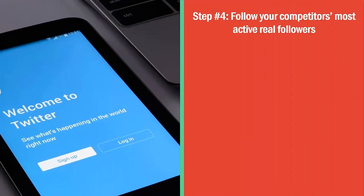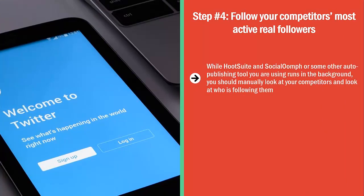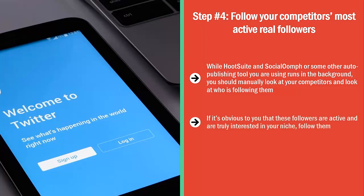Step number four: follow your competitors' most active real followers. While Hootsuite and Social Oomph or some other auto-publishing tool you are using runs in the background, you should manually look at your competitors and look at who is following them. Go to those accounts and pay attention to the activities of those followers. If it's obvious that these followers are active and truly interested in your niche, follow them.